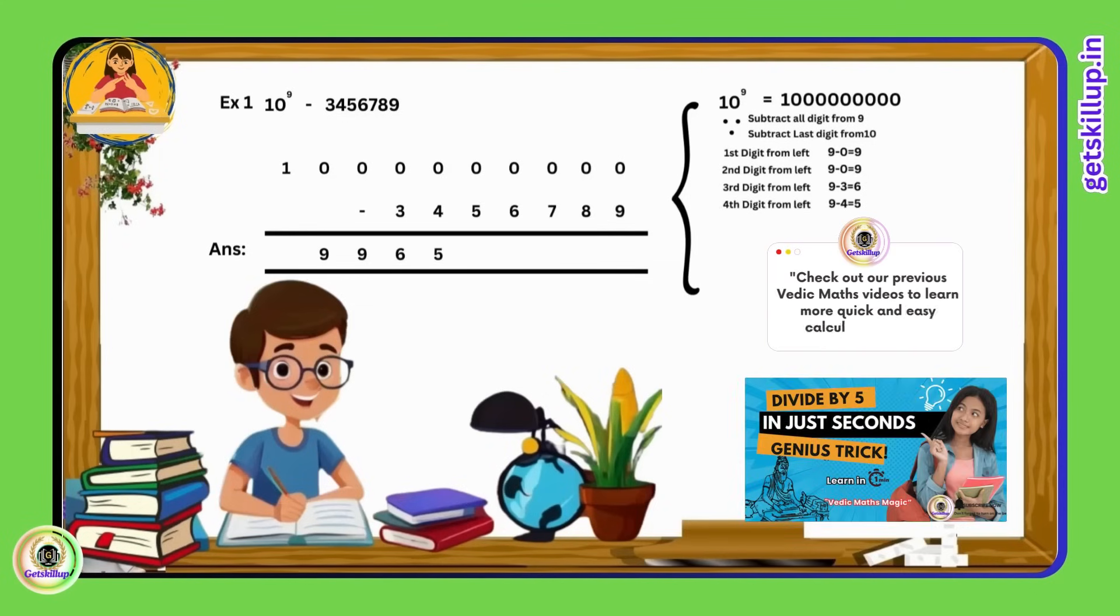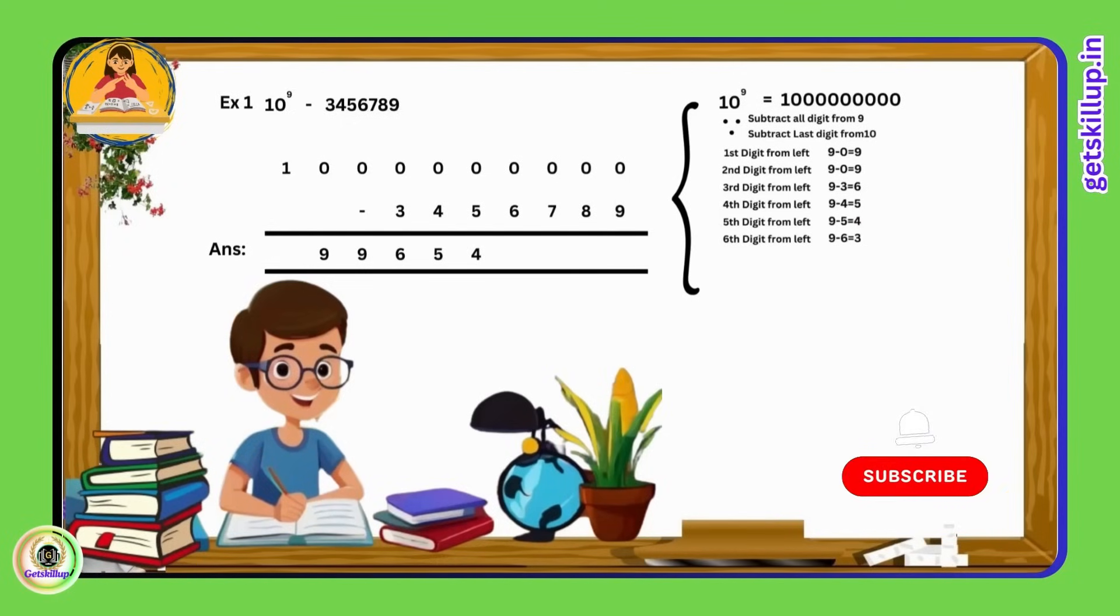The fifth digit, 9 minus 5 becomes 4. The sixth digit, 9 minus 6 becomes 3. The seventh digit, 9 minus 7 becomes 2. The eighth digit, 9 minus 8 becomes 1. And the last digit, 10 minus 9 becomes 1. So, the final answer is 99 crore 65 lakhs 43,211.